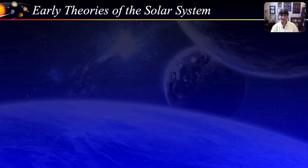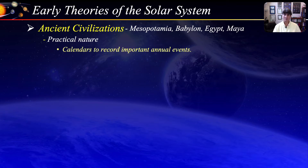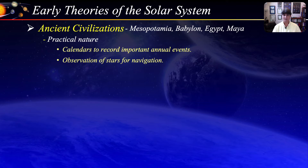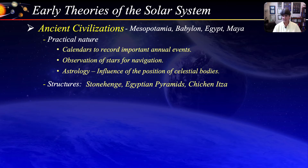As we talk about our solar system, it's nice to have a bit of a historical perspective. Ancient civilizations such as Mesopotamia, Babylon, Egypt, and the Maya mostly made celestial observations for a practical nature. They observed the motions of the sun, the moon, and the planets to create calendars to remind them of important annual events, such as when to plant and harvest crops. They also made observations of the stars to assist in navigation. Some observations were of an astrological nature — the study of how the relative positions of various celestial bodies would influence human affairs. Some cultures left behind extensive documents, while others left behind structures with significant astronomical alignments, such as Stonehenge in England, the Great Pyramids of Giza in Egypt, and the Mayan Caracol in Chichen Itza, Mexico.